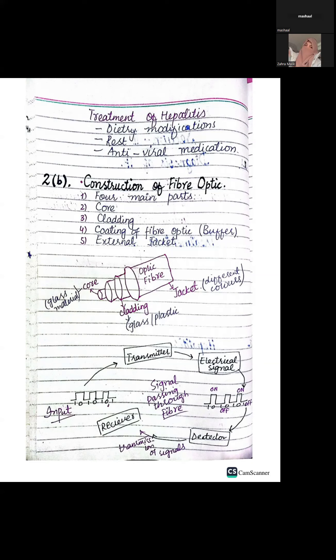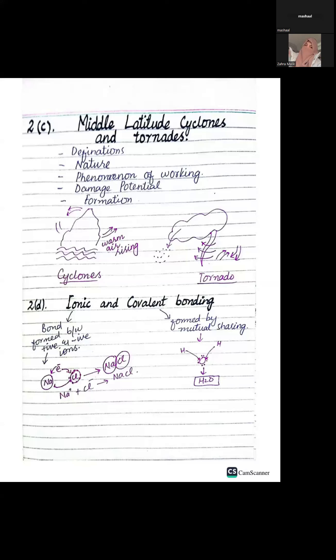For the difference between middle latitude cyclones and tornadoes, it is best to draw a line in the middle and list points on each side. Cover definitions, nature, phenomena of working, damage potential, and formation process for both. You can also draw diagrams at the end.